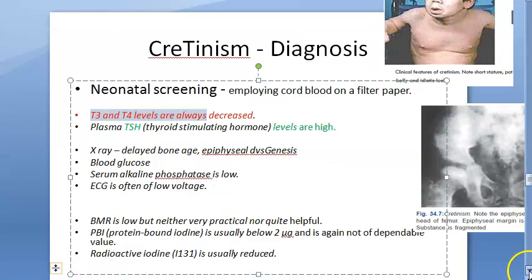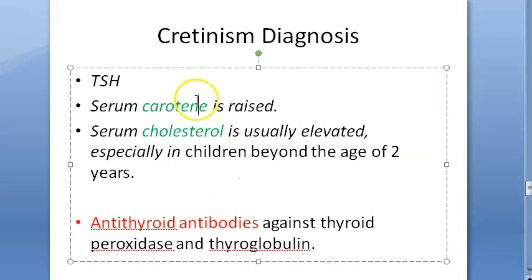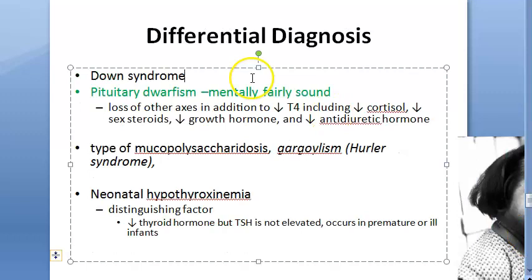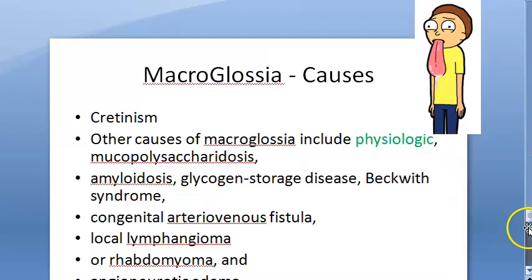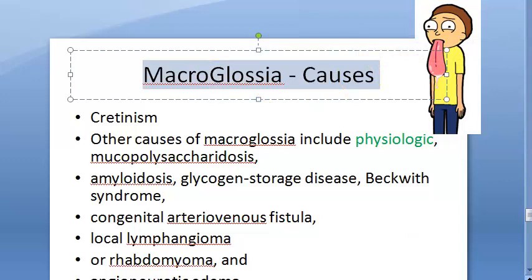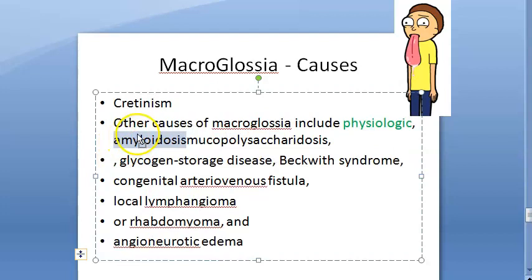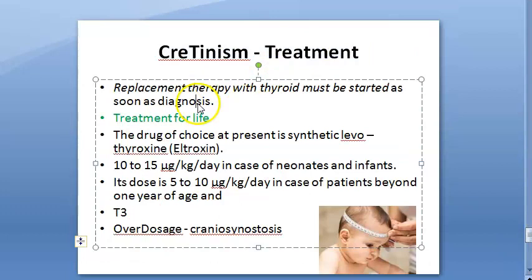Neonatal screening with cord blood and T4/TSH assay shows decreased T3/T4 and elevated TSH. X-ray shows delayed bone age and epiphyseal dysgenesis. Alkaline phosphatase is low, ECG is low voltage. TSH, serum carotene, and cholesterol are elevated. Differential diagnoses: neonatal hypothyroxinemia, Down syndrome, pituitary dwarfism, Hurler syndrome. Macroglossia has many causes including cretinism, amyloidosis, mucopolysaccharidosis, etc. Treatment is synthetic levothyroxine with a good prognosis if caught early.